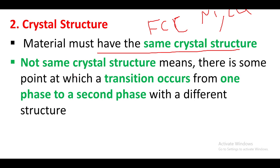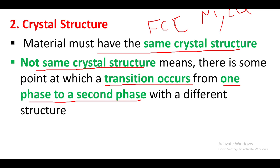If the materials being mixed do not have the same crystal structure, a phase transition occurs — a transition from one phase to another phase with a different structure. For example, if one material has an FCC structure and another has a BCC structure, a transition occurs from one phase to another.